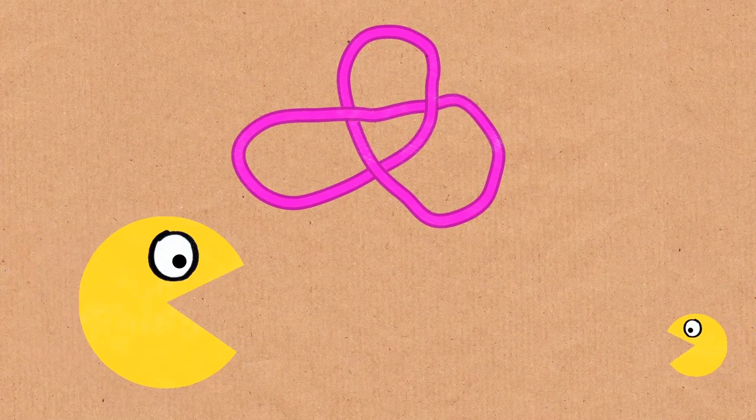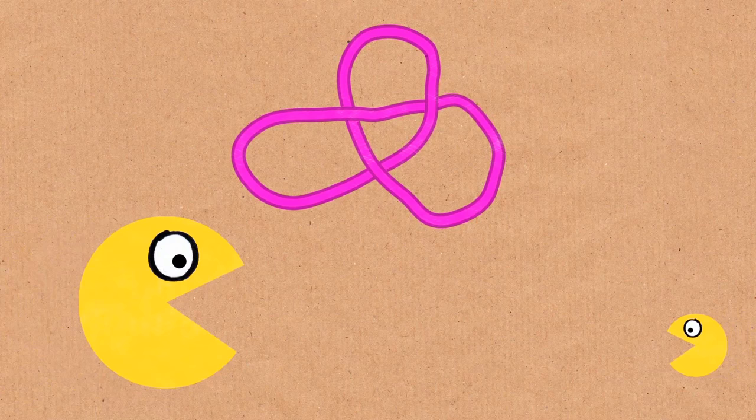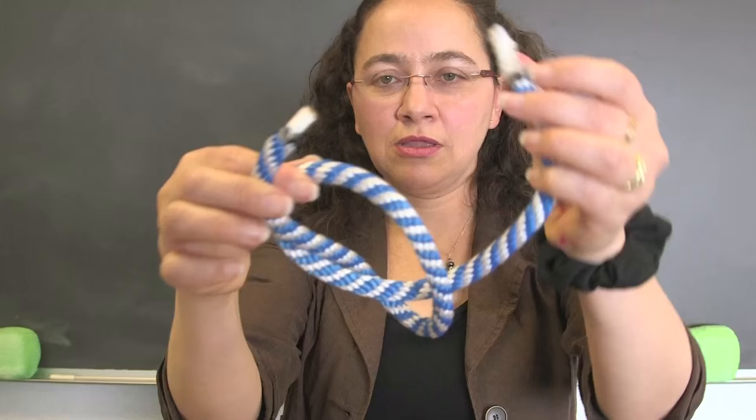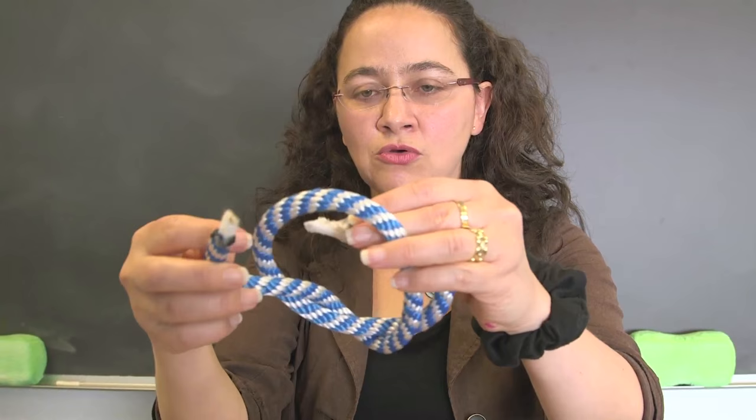So the cell has an army of enzymes that the moment they see a knot, they'll come here and say, oh look, there's a knot here, okay, we need to break it. They open, they break, they transport one strand through the break, and they reseal the break. And when they do that, they unknot the knot.